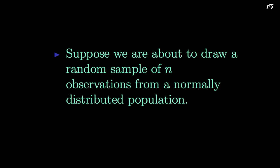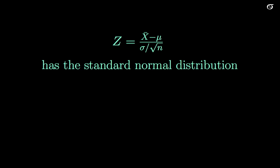So we're going to have our common situation here. We're about to draw a random sample of n observations from a normally distributed population, and we're going to have this statistic x bar minus mu over sigma over the root of n. We're going to call that a z, and that thing has a standard normal distribution.